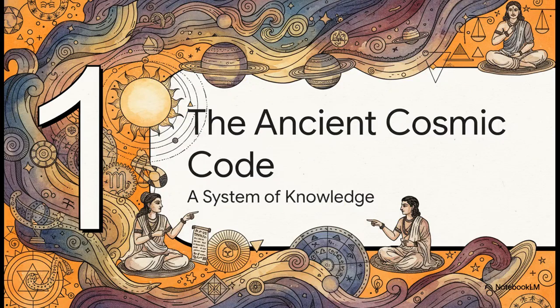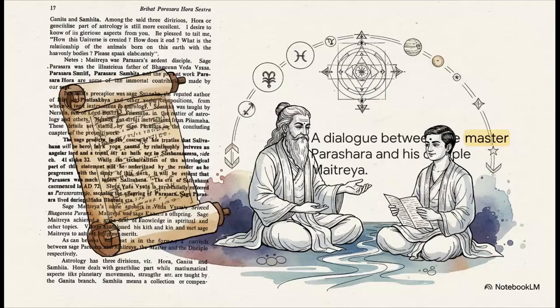Well, the answer lies hidden inside one of the oldest and most complete systems of astronomical knowledge ever written down. A system that has somehow, against all odds, survived for millennia, passed down through an unbroken chain of teachers and their students.